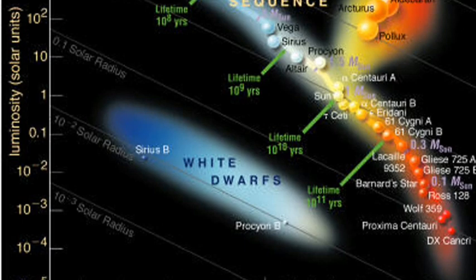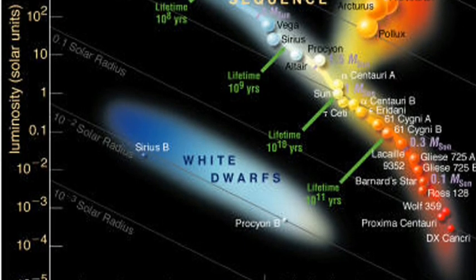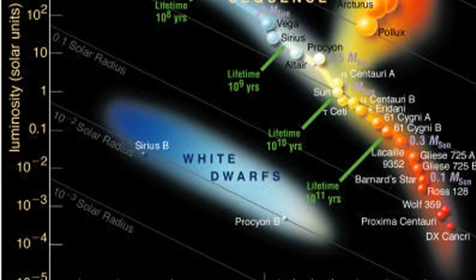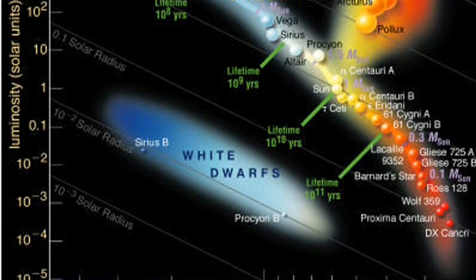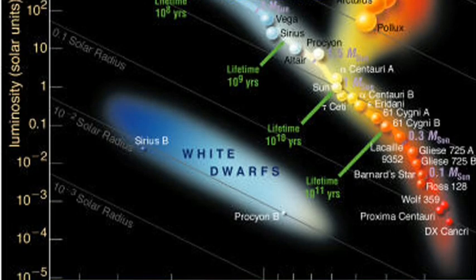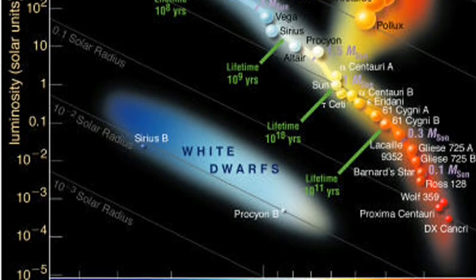The stars in the main sequence form a band that runs across the HR diagram. The sun is a main sequence star that has been shining for about 5 billion years. Scientists think that the sun is in the middle of its life and will remain on the main sequence for another 5 billion years.